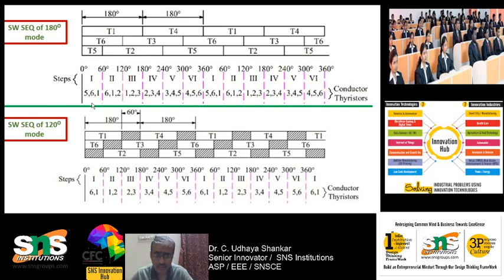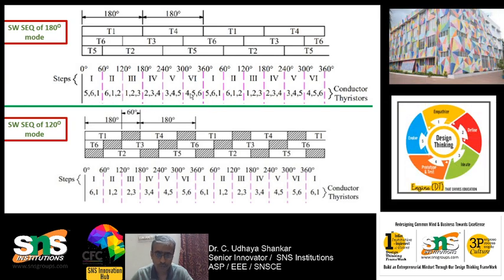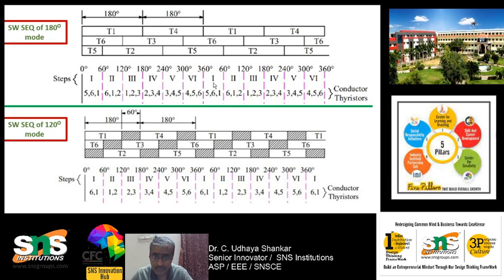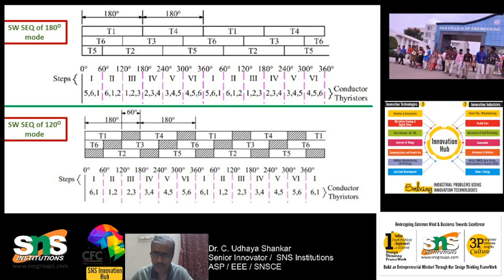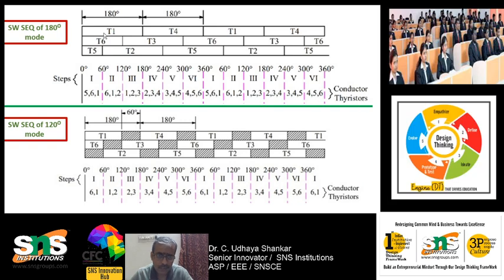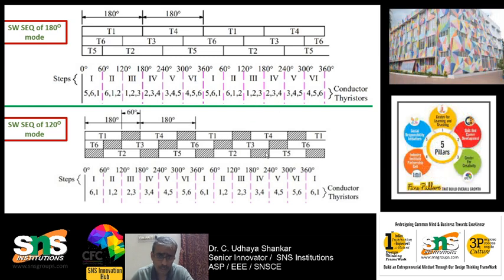The same switching sequence repeats: 1-2-3-4-5-6, then again 1-2-3-4-5-6. This is the first cycle and this is the second cycle; it keeps repeating. By repeating it you will be getting the three-phase AC output waveform. For the 120-degree mode, you can see there is a small gap between T1 and T4, whereas in 180-degree mode there is no gap — that is why there is a larger chance of short circuit in 180-degree mode.